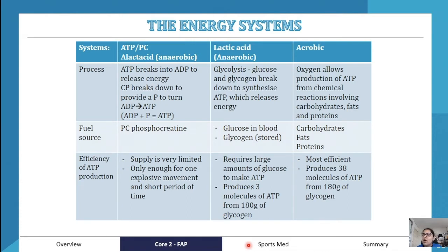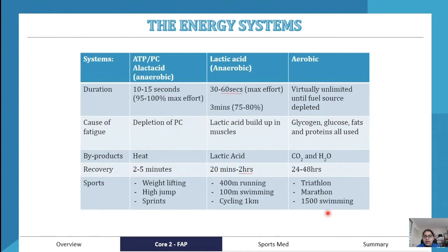The aerobic system uses oxygen, which allows for the production of ATP through chemical reactions involving carbohydrates, fats, and proteins — those are the fuel sources. In terms of efficiency, the aerobic system is the most efficient, producing 38 molecules of ATP from 180 grams of glycogen, compared to just three molecules from the lactic acid system. It is clearly the most efficient system.